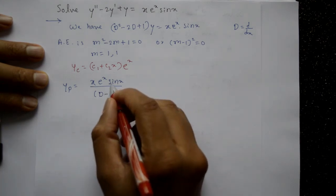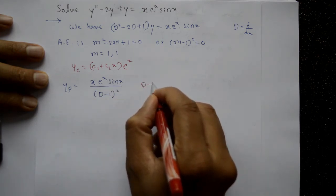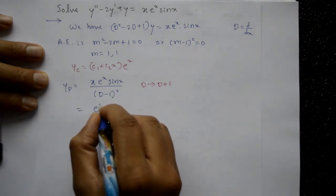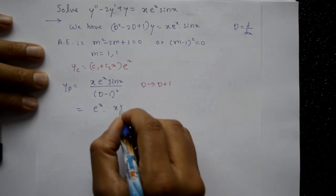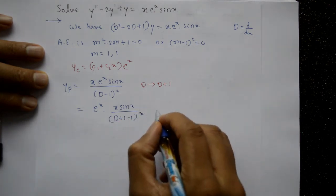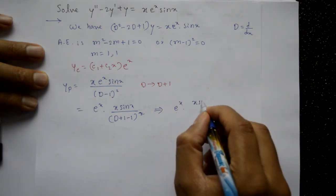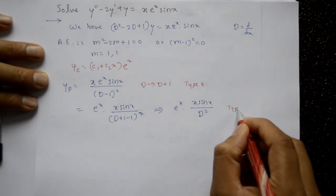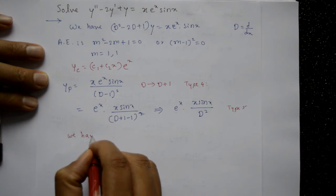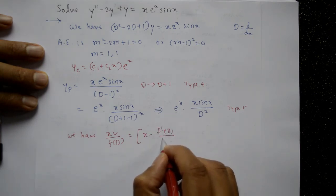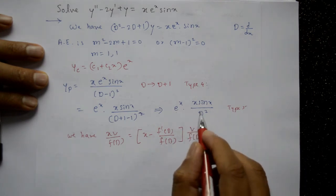Using Type 4 (exponential shift): for eˣ·v, replace D with D+1. So yp = eˣ·x·sin(x)/[(D+1−1)²] = eˣ·x·sin(x)/D². Now apply Type 5 formula: x·v/f(D) = [x − f'(D)/f(D)]·v/f(D), with v = sin(x) and f(D)=D². So yp = eˣ·[x − 2D/D²]·sin(x)/D² = eˣ·[x − 2/D]·sin(x)/D².